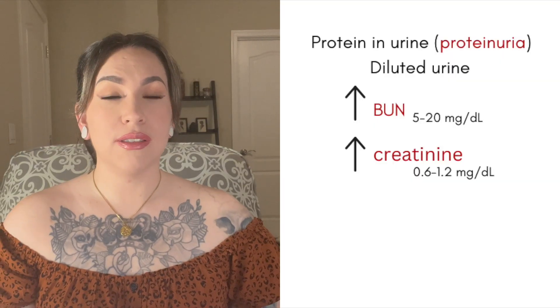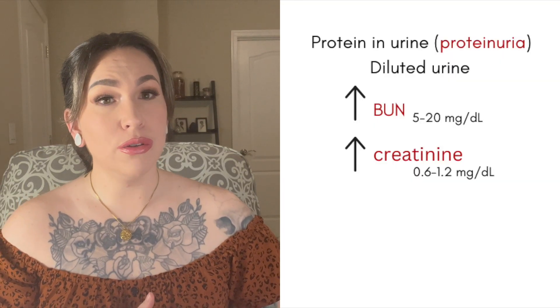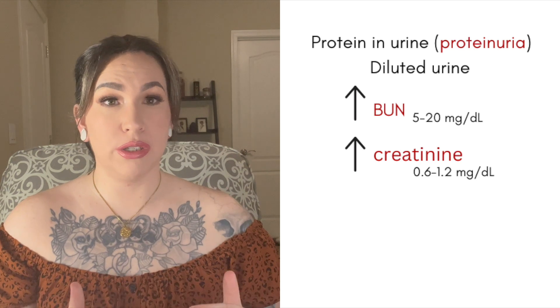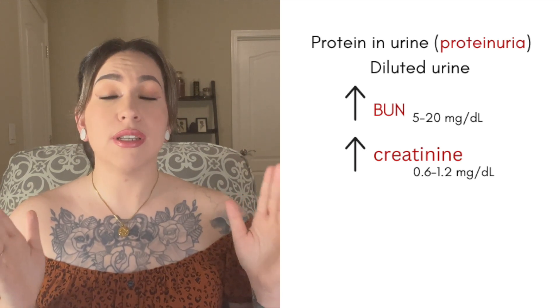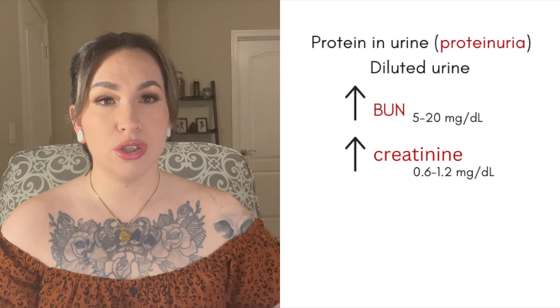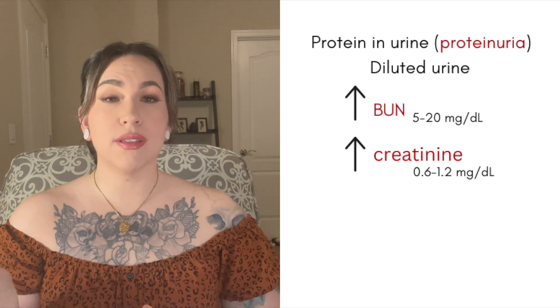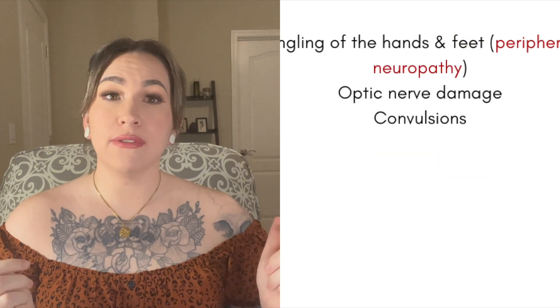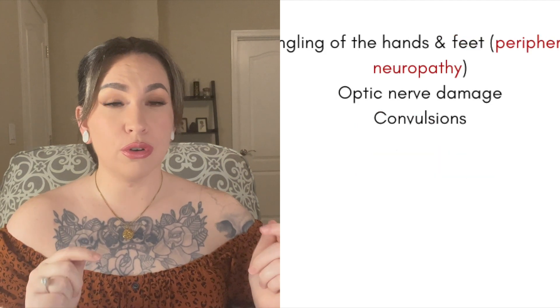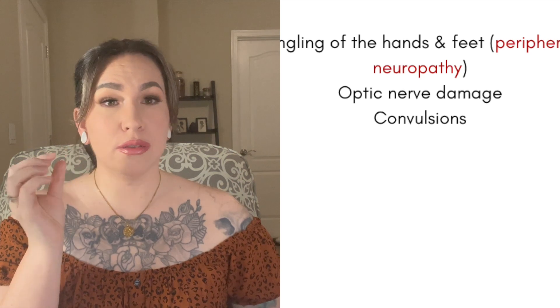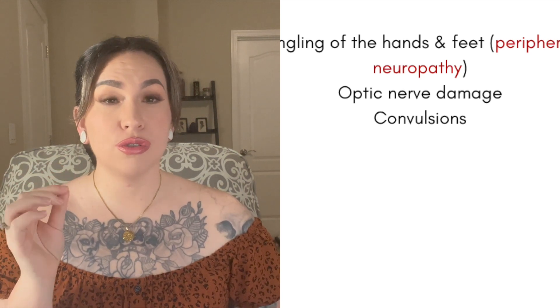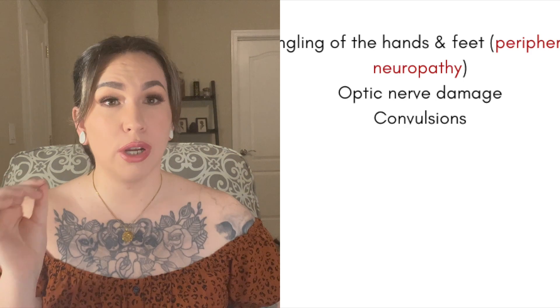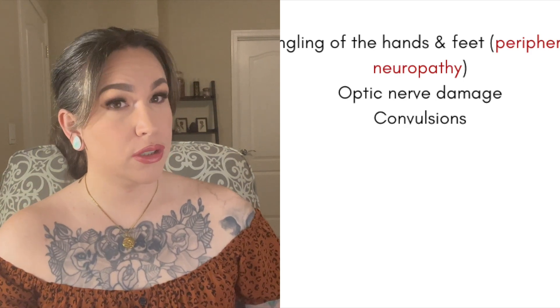Additional side effects include proteinuria; increased blood urea nitrogen (BUN), with normal ranges of 5–20 mg/dL; and increased creatinine, with normal limits between 0.6 and 1.2 mg/dL. They also cause tingling of the hands and feet — peripheral neuropathy — and optic nerve damage. Remember, aminoglycosides are neurotoxic, affecting the central nervous system and all cranial nerves, and they can cause convulsions.